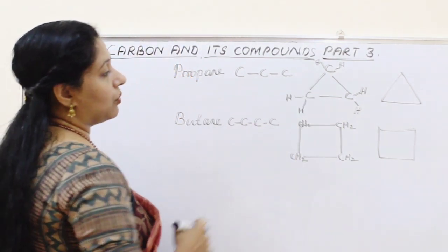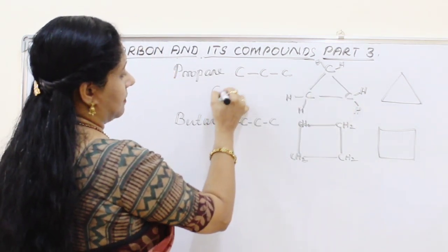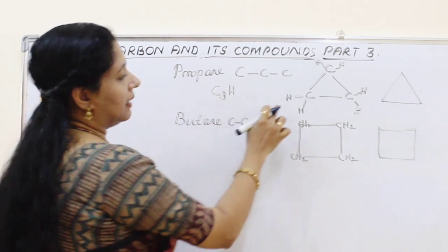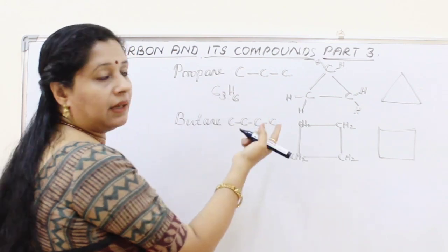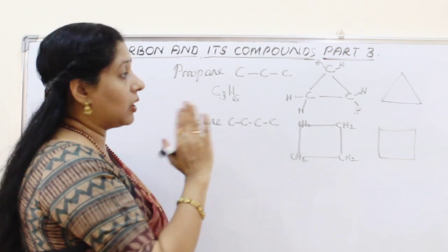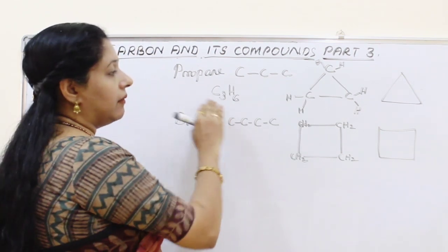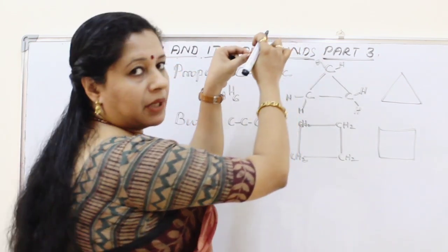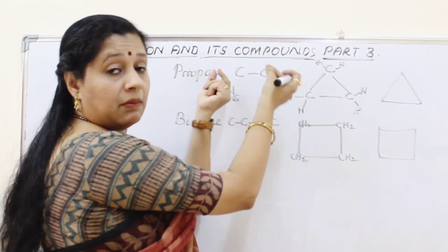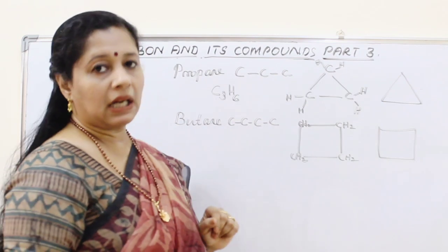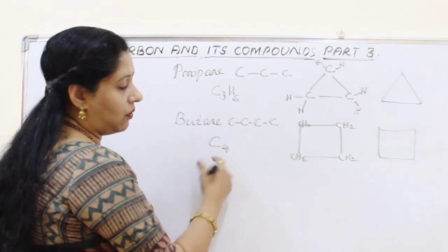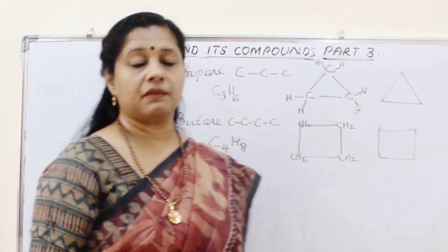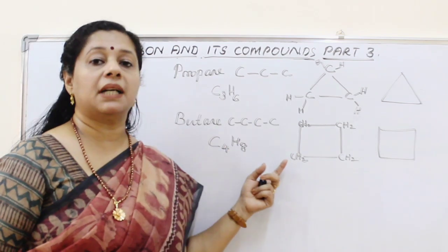In cyclopropane, there are 3 carbon atoms with only 6 hydrogen atoms — two fewer than expected for an alkane (C3H8). This is because two hydrogen atoms are removed when the end carbons are joined. The molecular formula resembles propene (an alkene), but it is actually cyclopropane. Similarly, cyclobutane has the formula C4H8, like butene, but it is not butene — it is a cyclic compound.